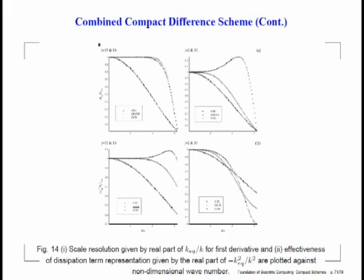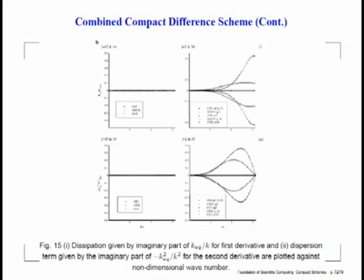At high wave number range, even a CD2 scheme seems to do better near the boundary. This was not so for the interior stencil. We plot the real part of k_eq non-dimensionalized, but k_eq also has an imaginary part, which we plot here. If I plot the imaginary part of the first derivative, you see all three schemes — CD2, OUCS3, and CCD — remain zero in the middle; they are non-dissipative central schemes.